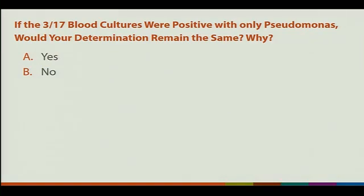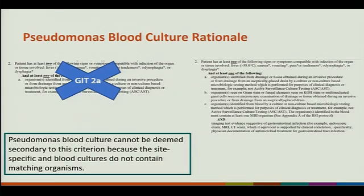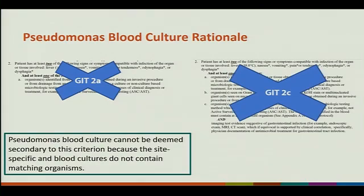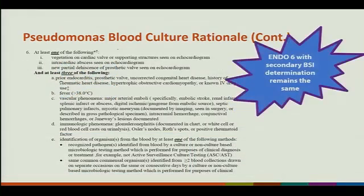If the 3/17 blood cultures were positive with only Pseudomonas, would your determination remain the same? No — you could not meet GIT IIa because the Pseudomonas blood culture does not match the Candida. Additionally, GIT IIc cannot be met with Pseudomonas because Pseudomonas is not an MBI organism. However, the endo-6 determination would remain the same. Thank you so much.